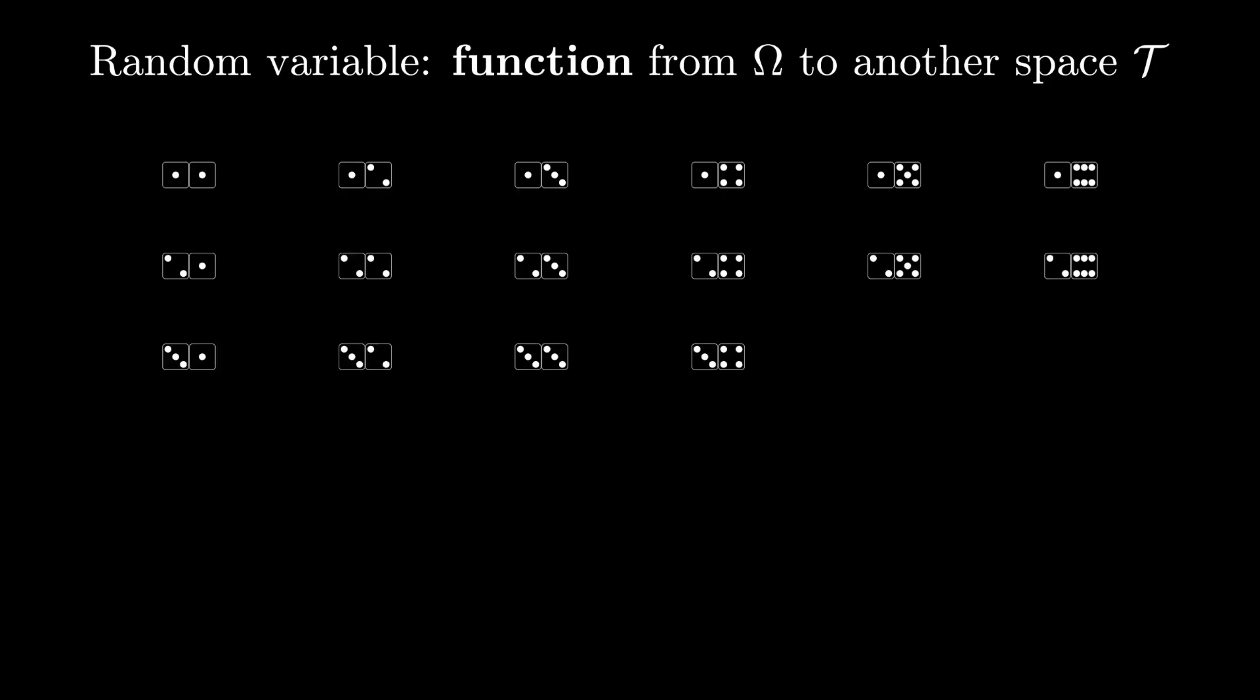Now that we've constructed a probability space, we can finally construct a random variable. The name random variable is terrible because what a random variable is, is a function from omega to another space here denoted calligraphic T.